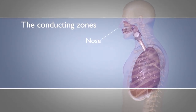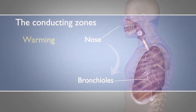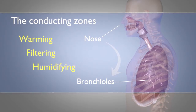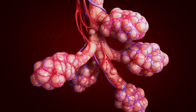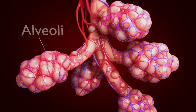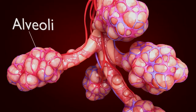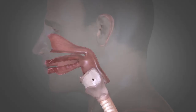A perhaps more useful functional classification divides the system into the conducting zones, which is the nose down to the bronchioles where the role is warming, filtering and humidifying inspired air, and the respiratory zones, which officially is just the alveoli where gas exchange takes place. Each part of the upper airways and conducting system is specially adapted to its role in gas exchange.